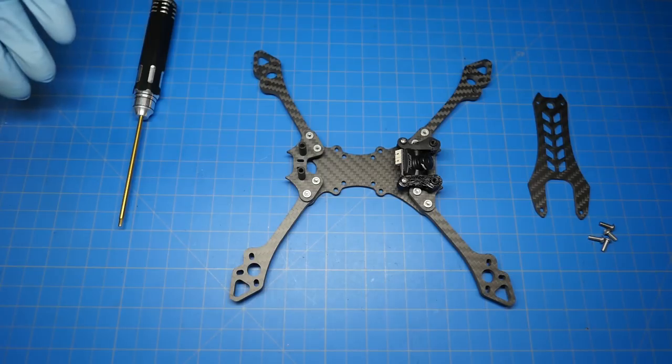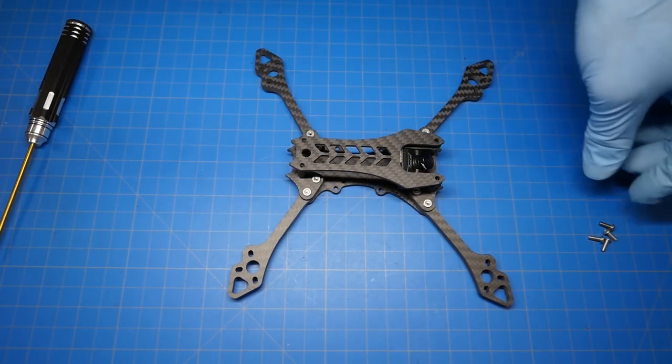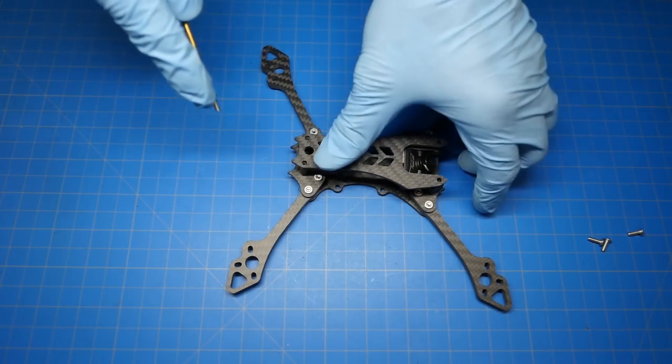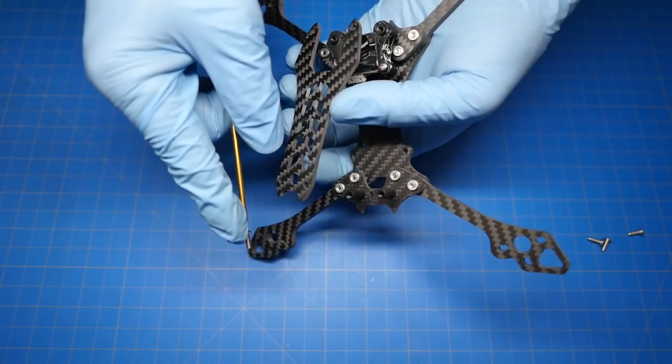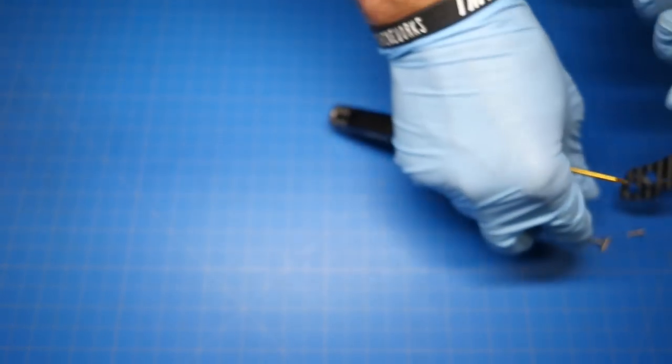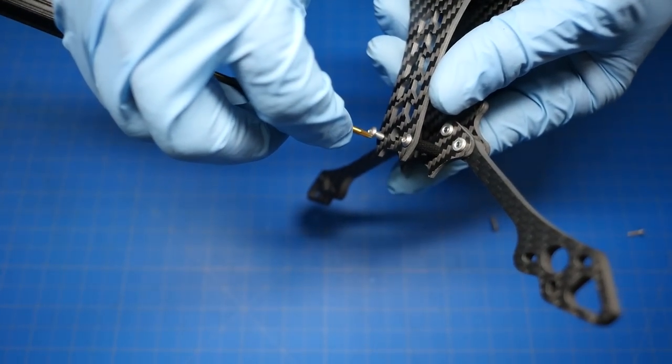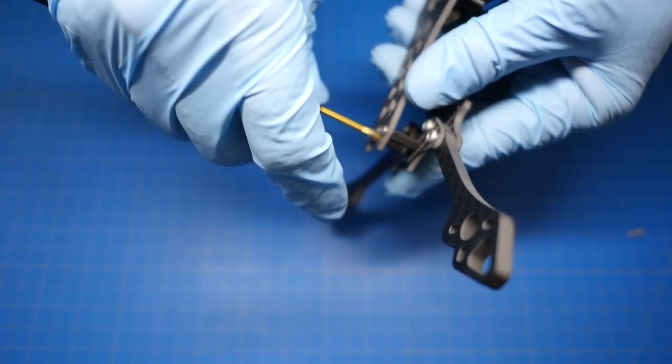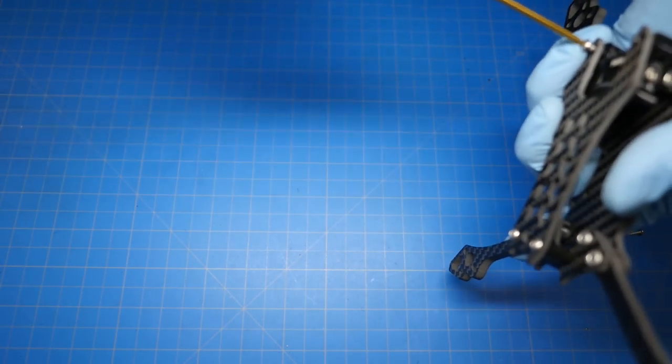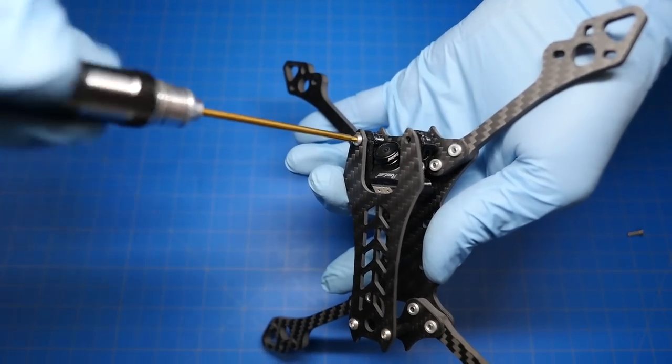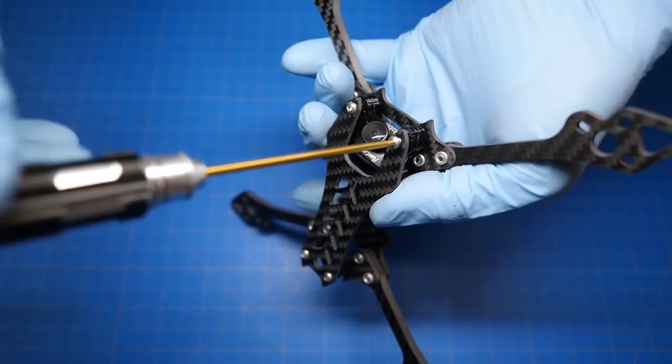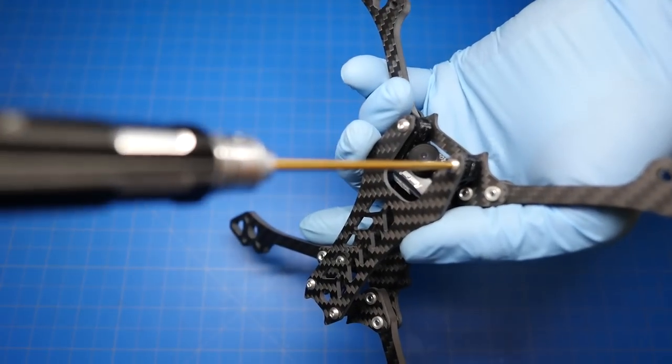As I mentioned, this is a really simple frame. So we're to the end here. Go ahead and put the top plate on. I went ahead and left the camera in there. We've got some button head screws. These are the same button head screws that are used on the bottom. I'm going to install this.